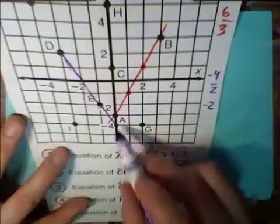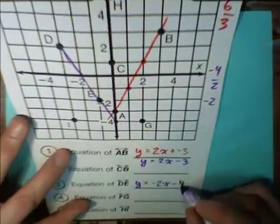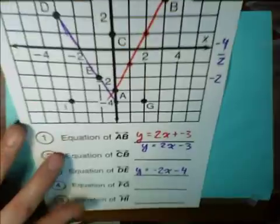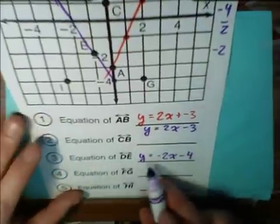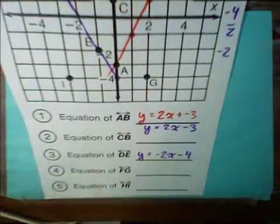We see that the y-intercept is actually one, two, three, four, negative four. So our equation in this case is y equals negative 2x minus 4.